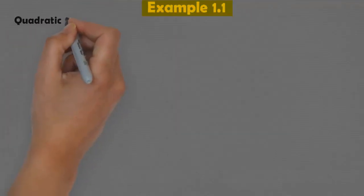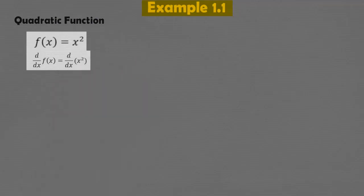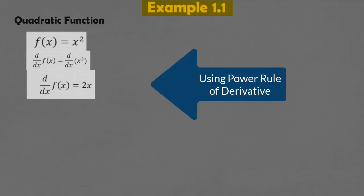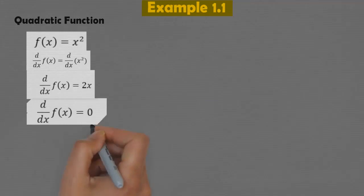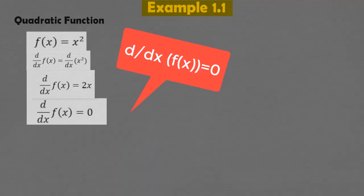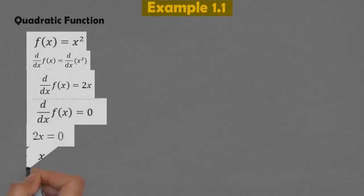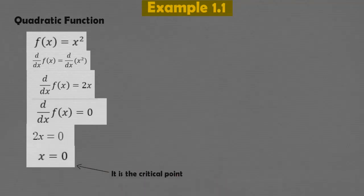Now coming to example 1.1: consider a quadratic function f(x) = x². Taking its derivative and applying the power rule, the derivative comes out to be 2x. Applying the first condition of a critical point, which is setting the derivative equal to zero and solving for x, x comes out to be zero. Therefore x = 0 is a critical point, because the derivative of the function at x = 0 is zero, which satisfies one of the conditions of a critical point.